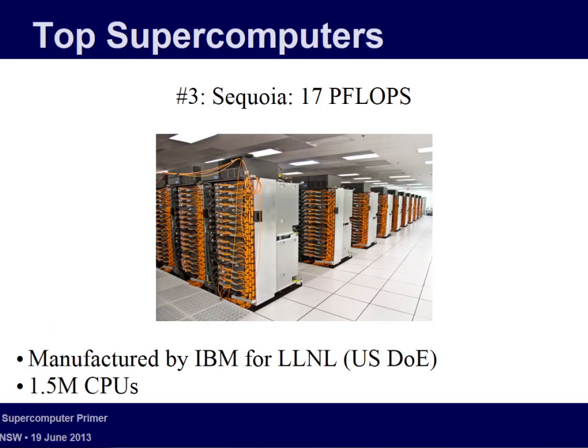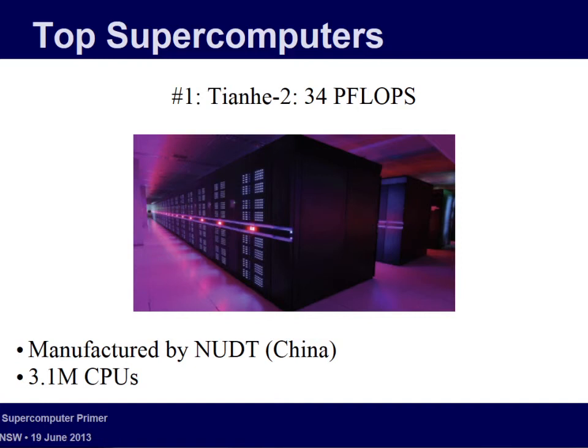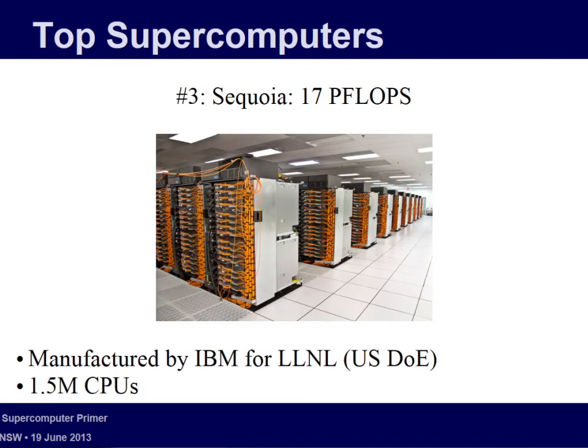The next one is Sequoia, another U.S. government computer. It's more your standard cluster, somewhat similar to Raijin here. Sequoia is quite known for being energy efficient compared to the others. These computers are in the order of megawatts of power. The lights actually change color depending on how much power they're using. I think this one is about 20 to 30 megawatts, this one about 10 megawatts, and Sequoia around 2 megawatts — that's one of its notable points.